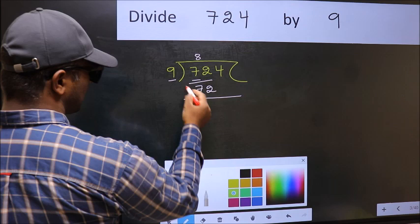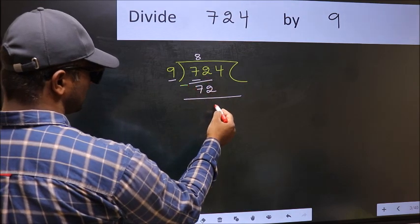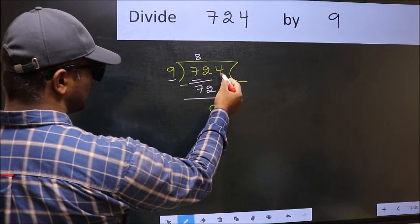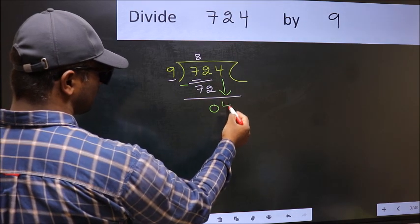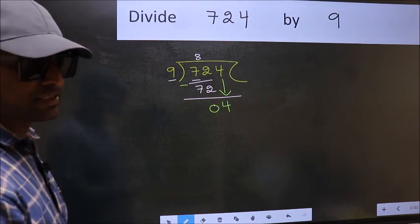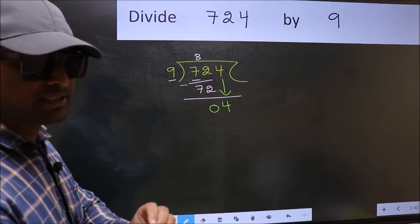Now we should subtract 72 minus 72, 0. After this, bring down the beside number, so 4 down. After this step, the mistake happens. And the mistake is this.